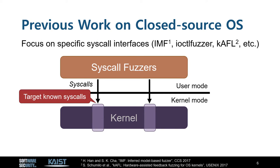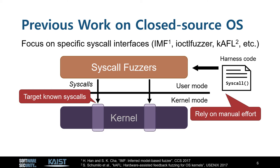However, this limits the generality of syscall fuzzing. Second, fuzzers can rely on manually written harness code. In other words, a security expert needs to reverse engineer OS code to figure out how to provide arguments to a specific target syscall. Then the expert should manually write a harness code which repeatedly calls the target syscall with mutated arguments. For example, kAFL takes this kind of approach. However, considering the fact that Windows has more than a thousand system calls, such a manual approach is not scalable.